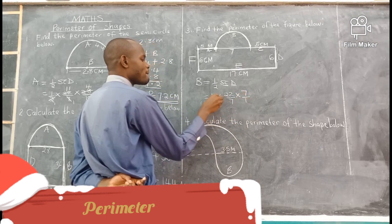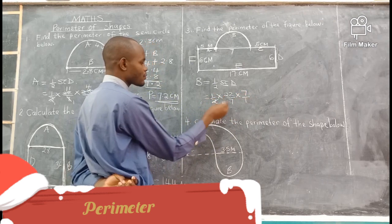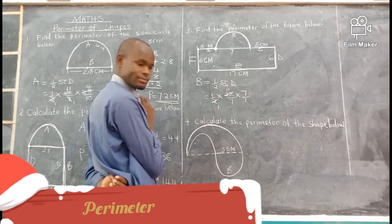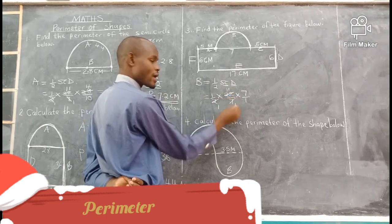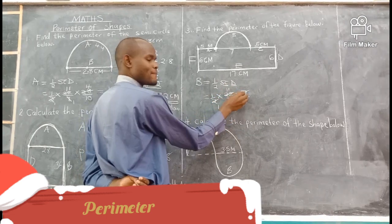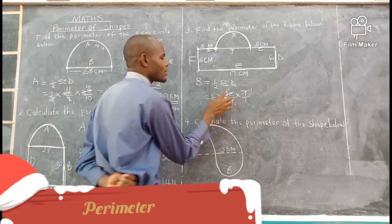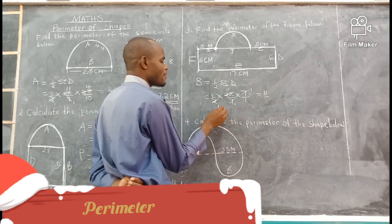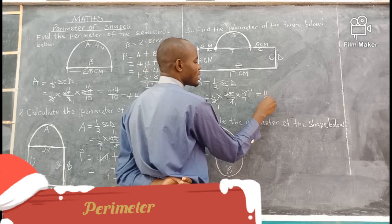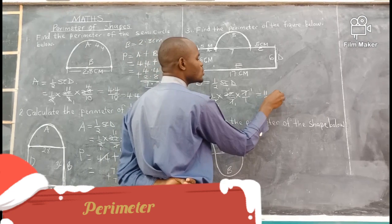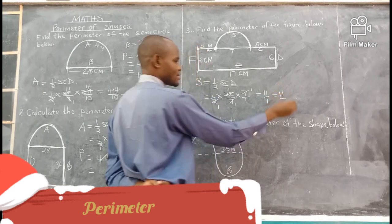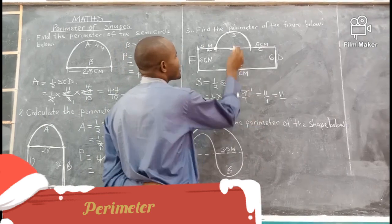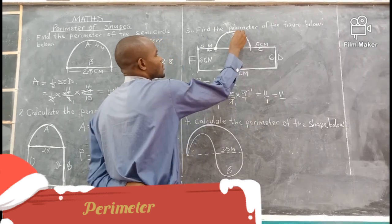So diameter is 7, over 1. Dividing: 7 divided by 7 gives 1; 22 divided by 2 gives 11. So 11 times 1 gives 11, over 1 times 1 gives 1. B equals 11. That is our B.